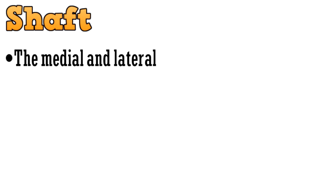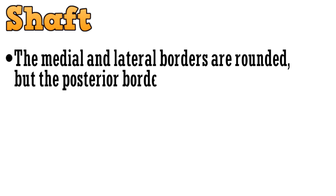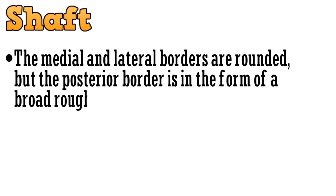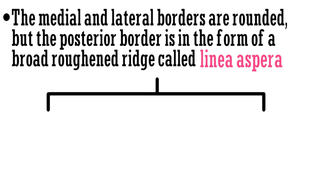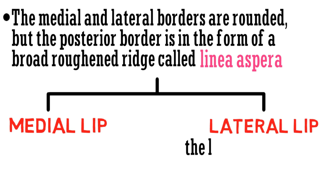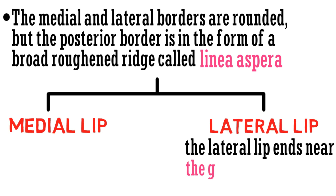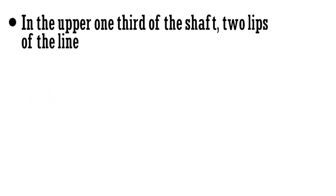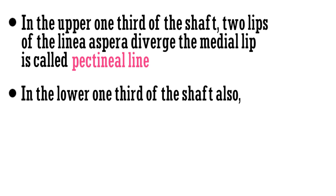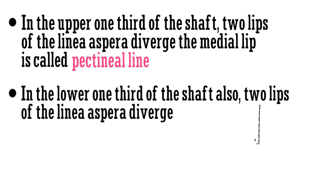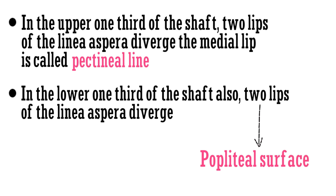The medial and lateral borders are rounded, but the posterior border is in the form of a broad roughened ridge called the linea aspera, which has two lips: the medial lip and the lateral lip. The lateral lip ends near the gluteal tuberosity. In the upper one third of the shaft, the two lips diverge and the medial lip is called the pectineal line. In the lower one third, the two lips also diverge and the space between them is called the popliteal surface.